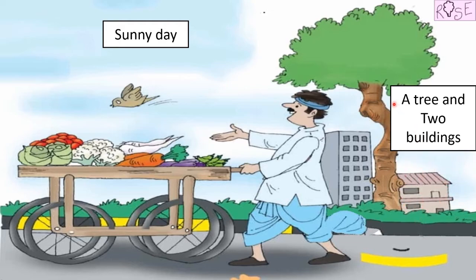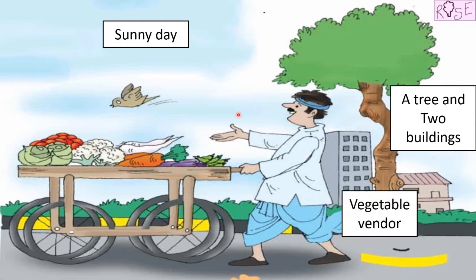What else can you see in this picture? Who is this person? Can you tell me? I think he is a vegetable vendor. Yes, and who is a vendor? A vendor is a person who sells something. So what is he selling? He is selling some vegetables. So he is a vegetable vendor.